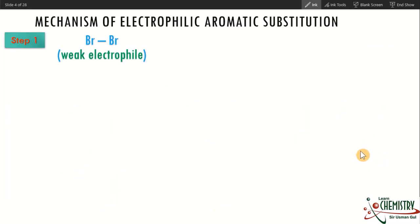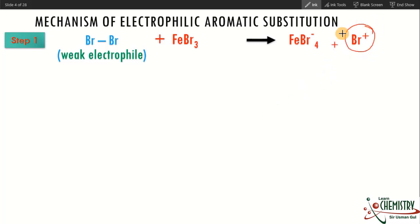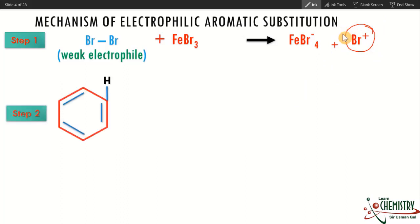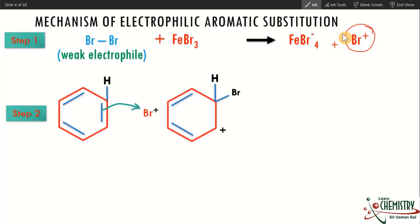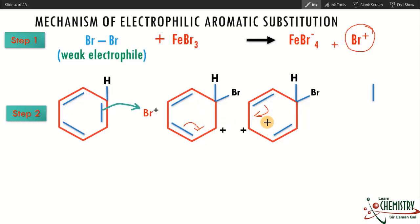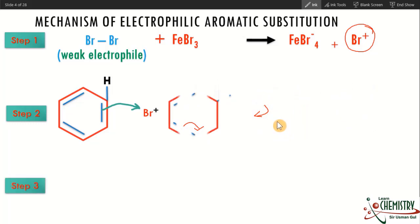For halogenation, let's consider Br2, which is a weak electrophile. When it reacts with the Lewis acid FeBr3, FeBr3 accepts a pair of electrons from Br2, forming FeBr4 minus and generating a strong electrophile Br+. This Br+ is now ready to react with benzene. One pi bond of benzene reacts with Br+, forming an addition product — an arenium cation. Because of the delocalization system in benzene, the positive charge also gets delocalized.